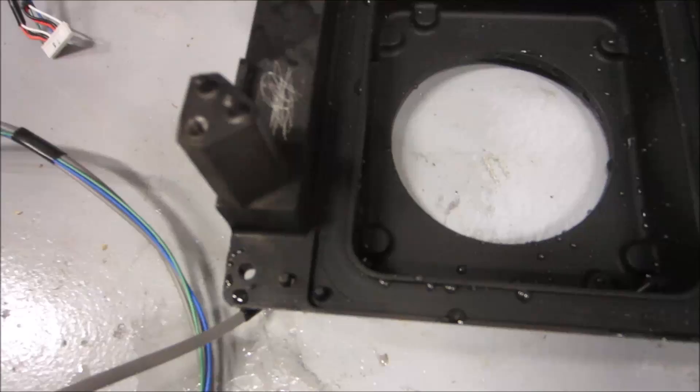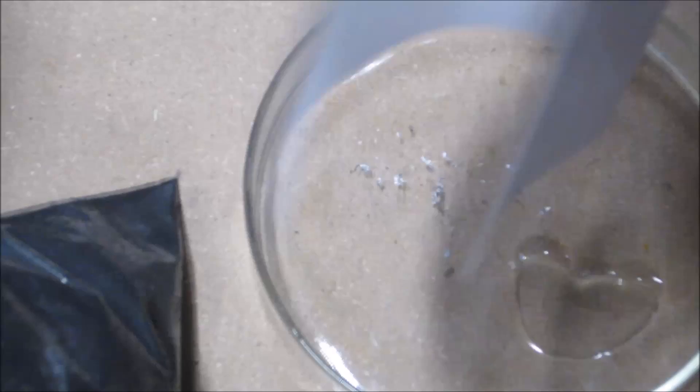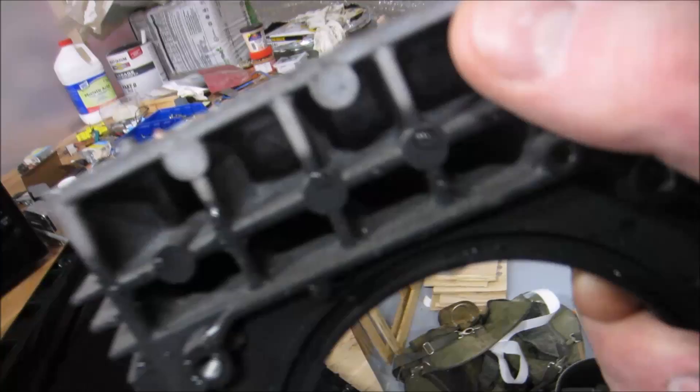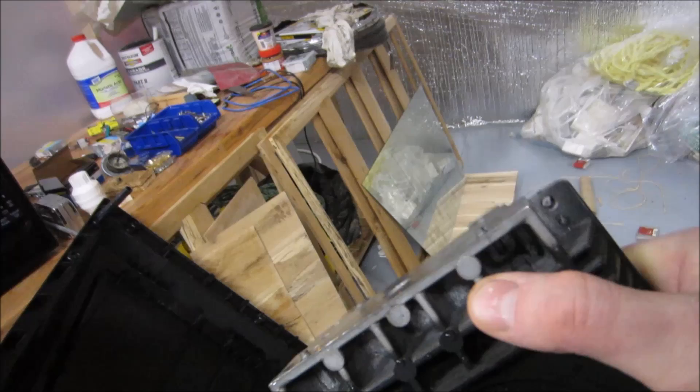Okay so apparently with magnesium you can do a vinegar test and it should react. This clearly is not magnesium. It's not reacting very strongly at all to this vinegar. So my guess is... It really doesn't look like aluminum at all. I'm not sure exactly what it is.